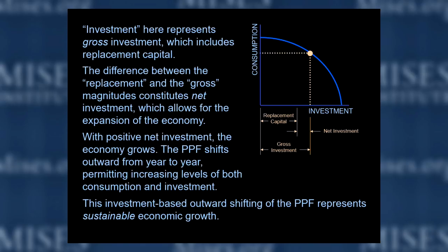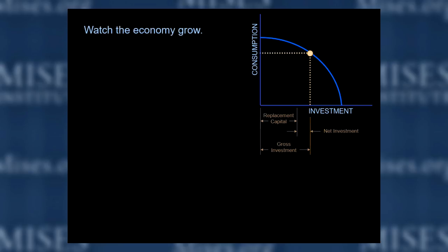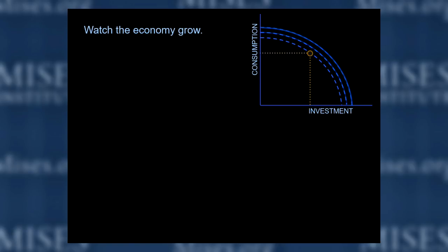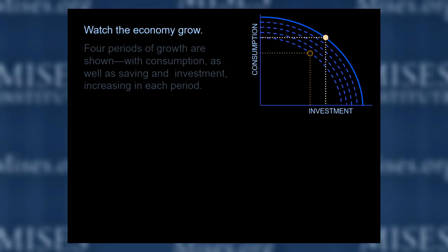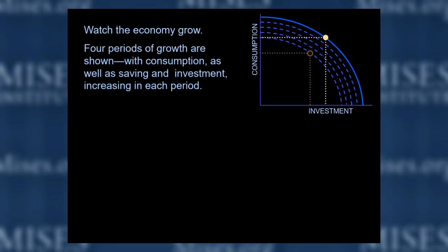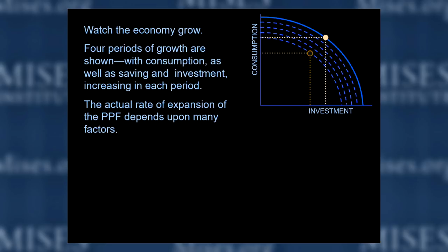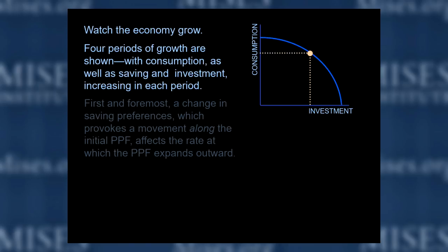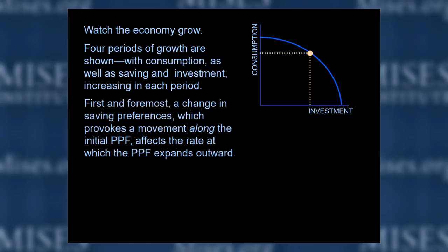This investment-based outward shifting of the PPF represents sustainable economic growth. Four periods of growth are shown, with consumption as well as saving and investment increasing each period because there's savings going on. The actual rate of expansion of the PPF depends on many factors, first and foremost a change in saving preferences. A change in saving preferences provokes a movement along the PPF and affects the rate at which the PPF expands. It's more like demographic factors — as those change, there may be more overall savings in the economy.